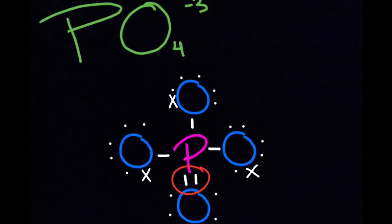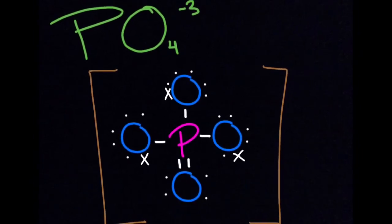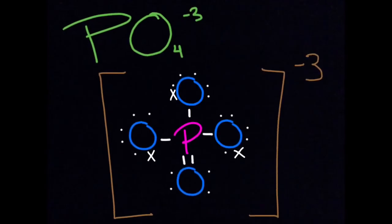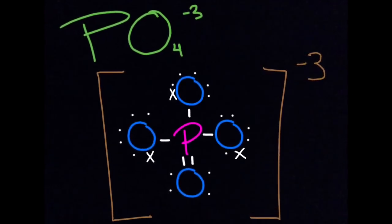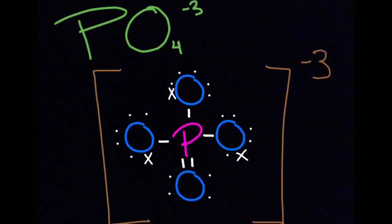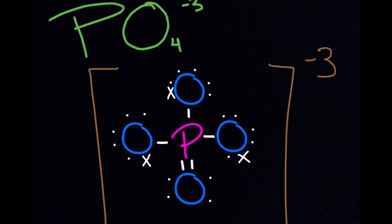And now to finish, you're going to add brackets around our Lewis dot structure, because we added electrons. Next you are going to signify that we added three electrons by putting a minus three outside of the bracket. This signifies that three electrons were lost from the atmosphere.